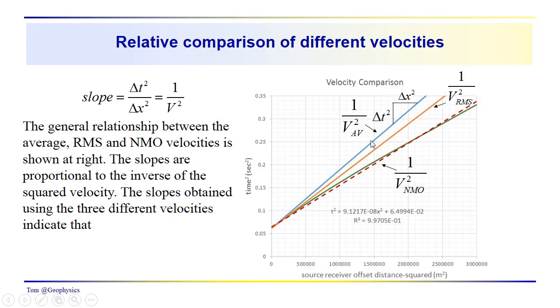And you can see that this slope is larger, so the average velocity is less than the RMS velocity, which we've just calculated using the equation for the RMS velocity. So the average velocity is less than the RMS.